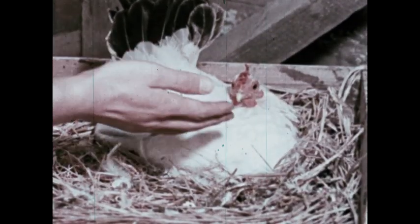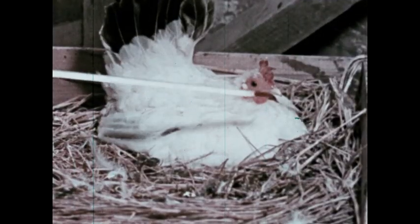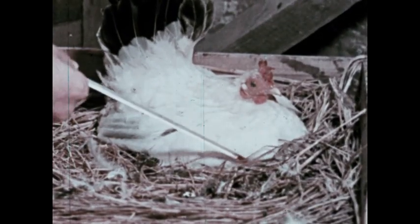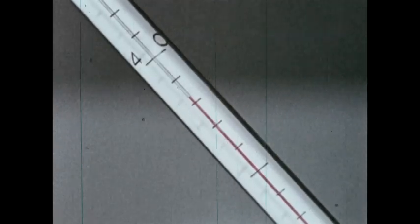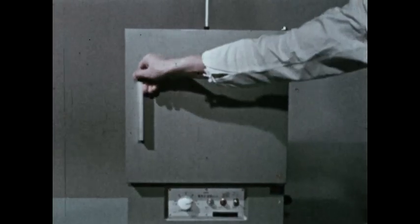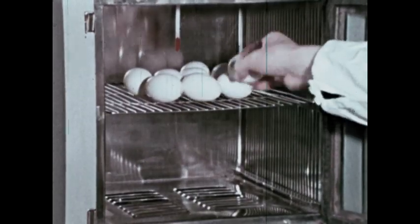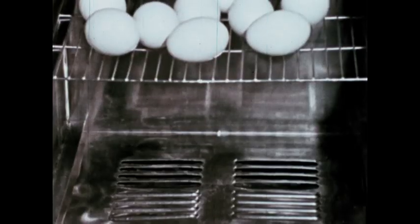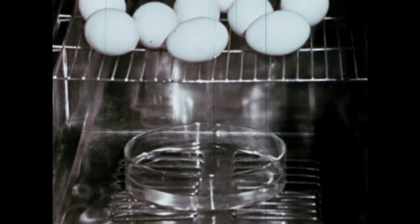Then the hen sits on her eggs to keep them warm and moist, while the babies grow inside them. How warm do the eggs have to be? The thermometer reads slightly more than 38 degrees centigrade. We can keep the same temperature in a machine, an artificial incubator used to hatch eggs. The temperature is 38 degrees centigrade. That's about 100 degrees Fahrenheit, a little warmer than your body. Water in the incubator keeps the eggs moist, like a hen's body does.